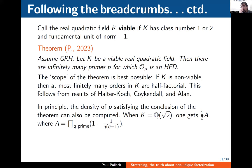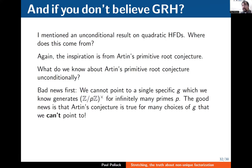When K = Q(√2), you can compute a density: the proportion of primes p for which the order of conductor p inside Z[√2] is a half-factorial domain is half of the Artin constant — an explicit Euler product. I also mentioned unconditional results on quadratic HFDs. You can prove without any hypothesis that there are infinitely many HFDs as you vary over all quadratic fields and all orders inside them. The inspiration comes from work on Artin's primitive root conjecture.